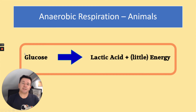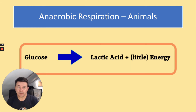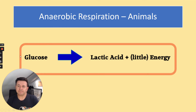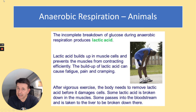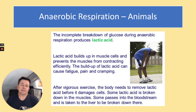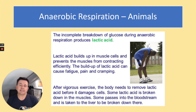Anaerobic respiration — there are two equations. One is for animals: glucose in the absence of oxygen is converted into lactic acid and a smaller amount of energy than aerobic respiration. Anaerobic means without oxygen. The incomplete breakdown of glucose produces lactic acid, which builds up in muscle cells and causes pain, fatigue, and cramping. After vigorous exercise, when you're resting, you need to remove it by repaying what we call an oxygen debt — breathing deeply so the lactic acid can be broken down in the muscles, and some is taken to the liver to be broken down there.